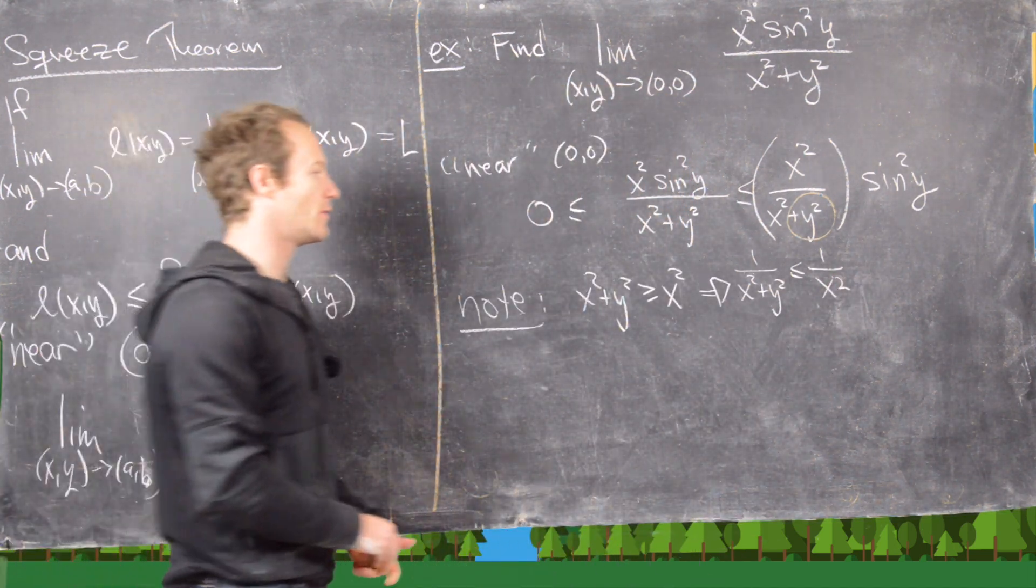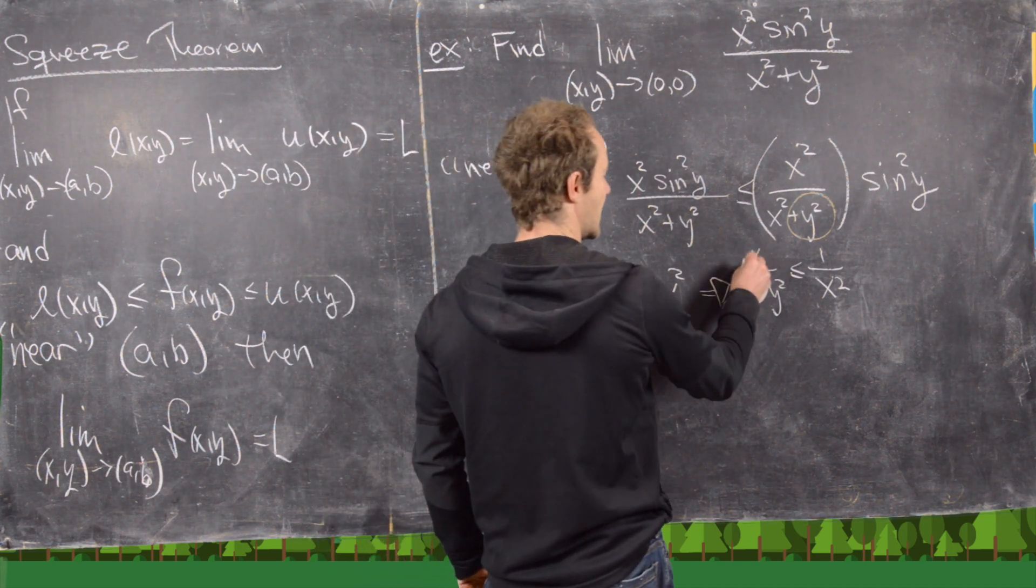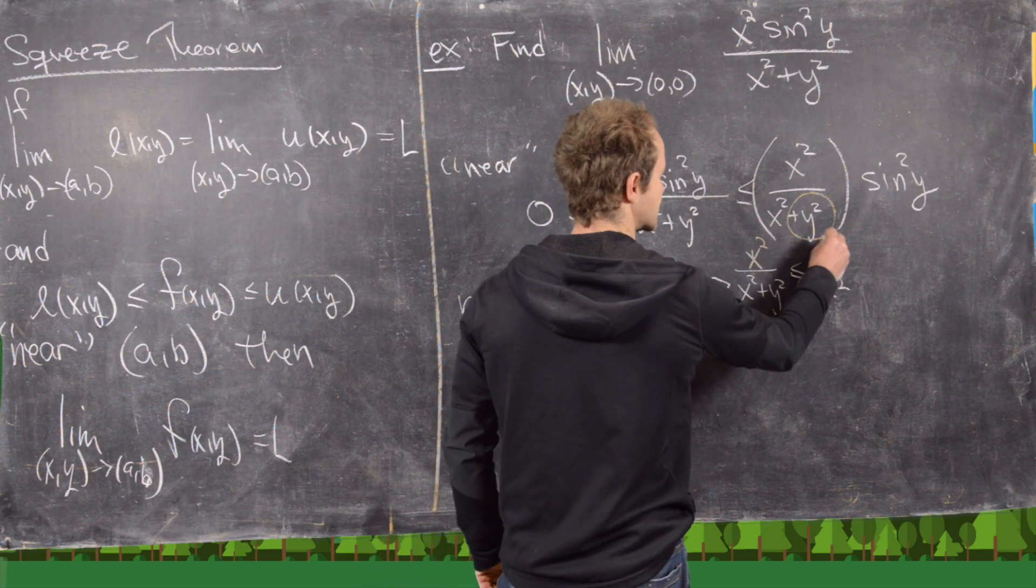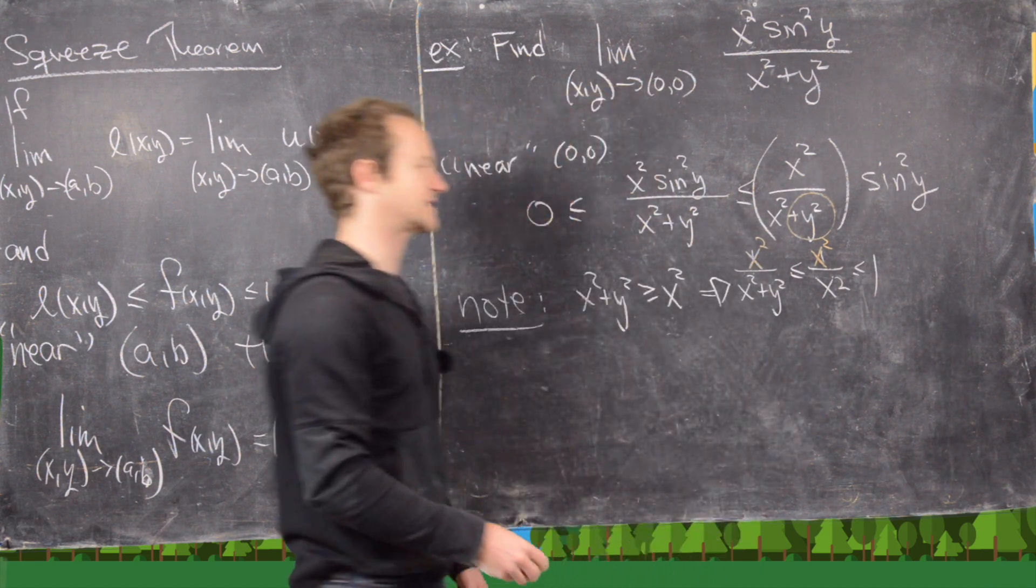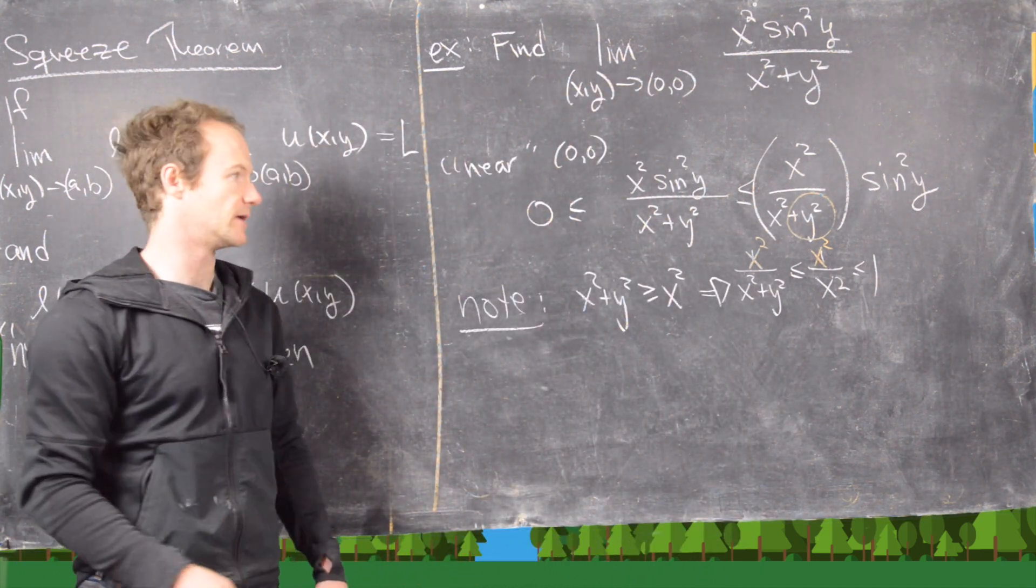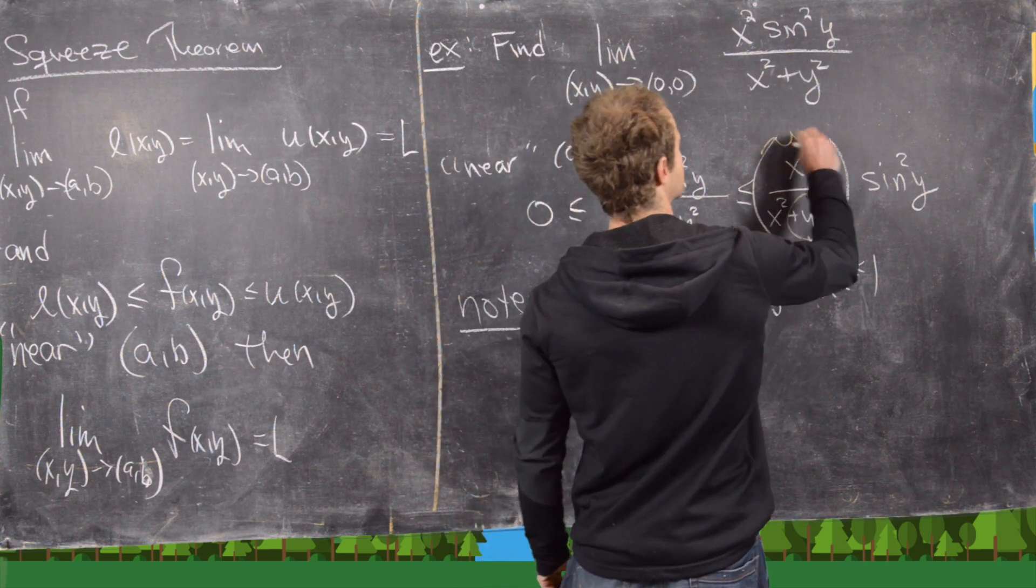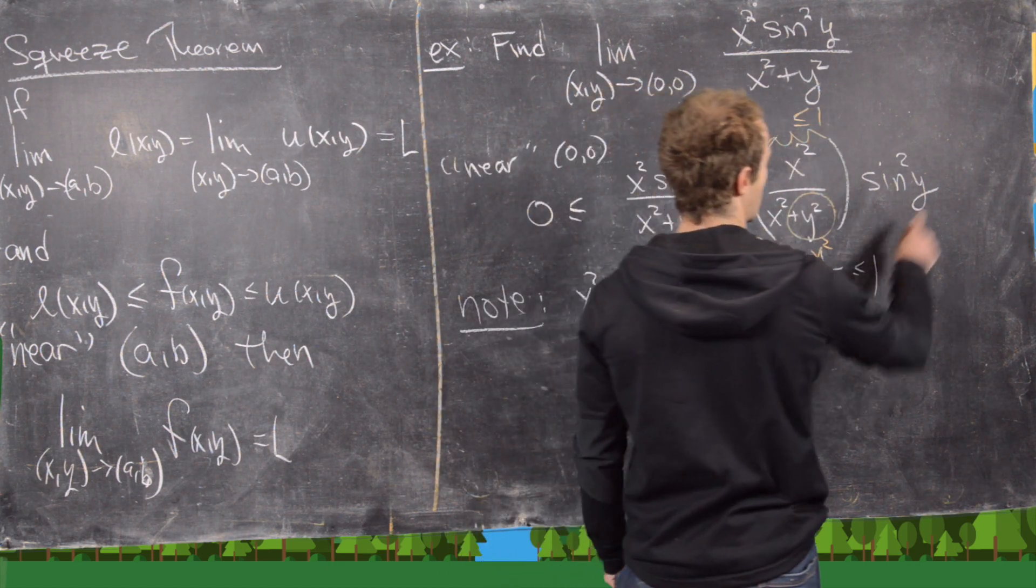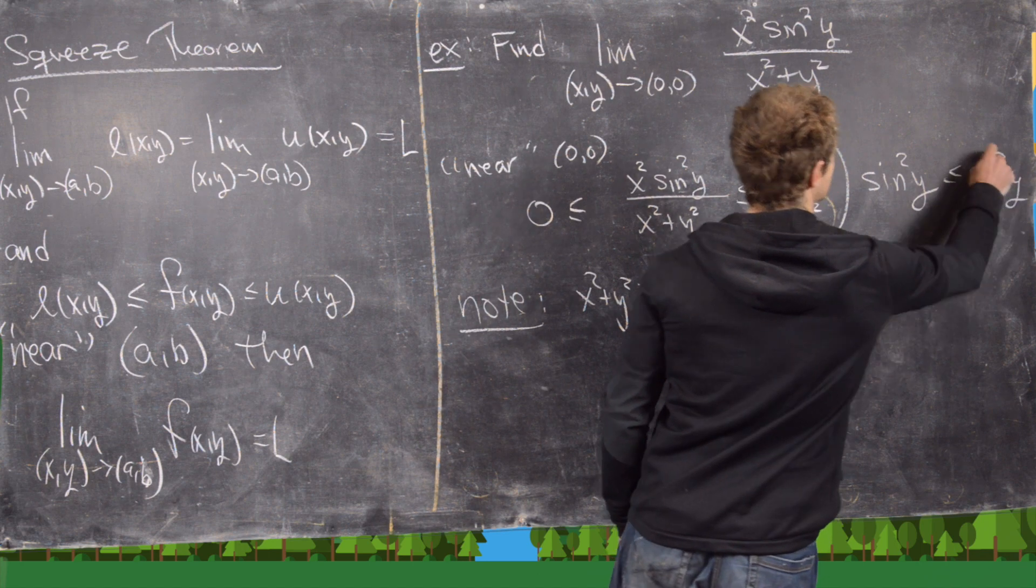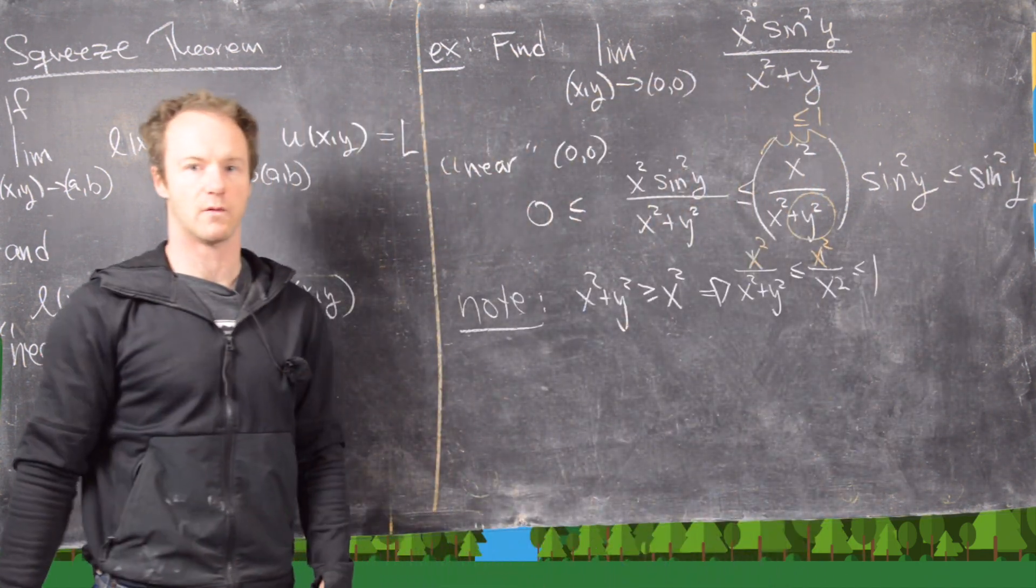Great. And now what we can do is just take this and multiply it by x squared, but that's going to give us that this is less than or equal to 1. Okay, good. So that means all of this is less than or equal to 1, which makes this whole thing less than or equal to sine squared of y.